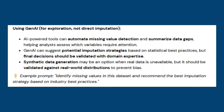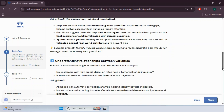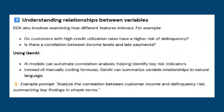Step three is understanding relationships between variables. EDA involves examining how different features interact. For example: do customers with high credit utilization rates have a higher risk of delinquency? Is there a correlation between income level and late payments? Using a GenAI model can automate correlation analysis, helping identify key risk indicators. Instead of manually coding formulas, GenAI can summarize variable relationships in natural language. For example, use the prompt: 'Analyze the correlation between customer income and delinquency risk, summarizing key findings in simple terms.'